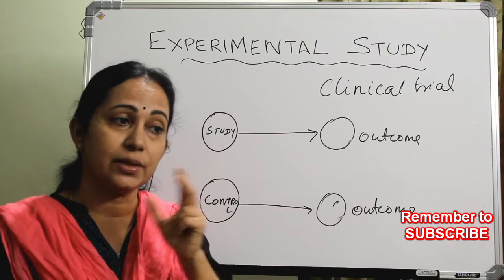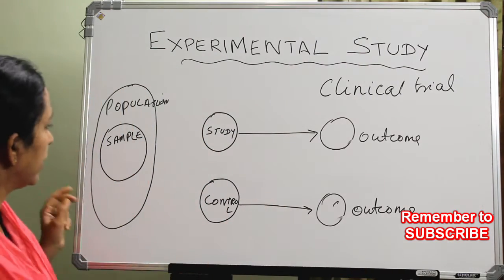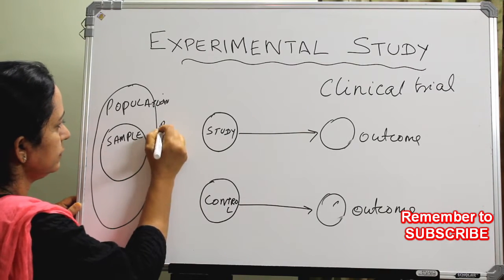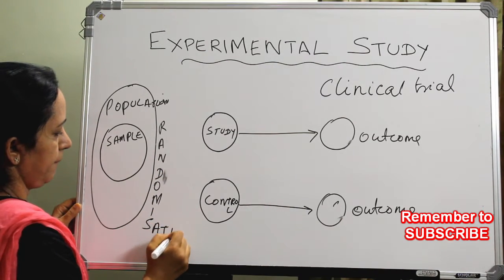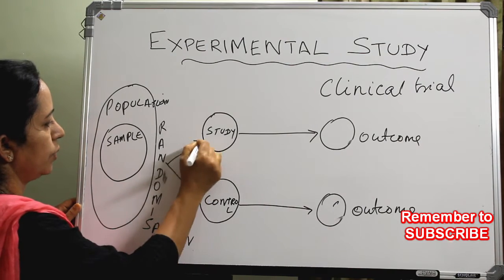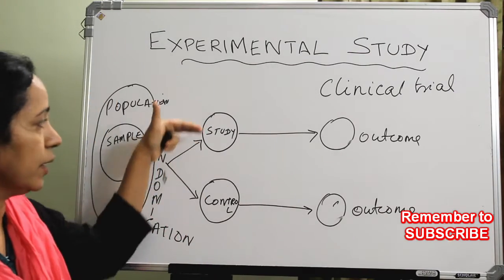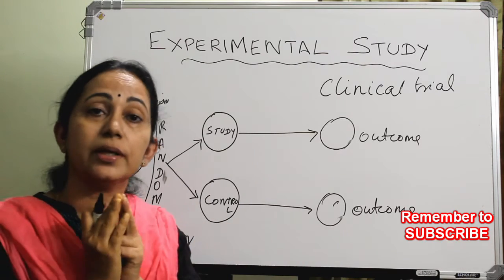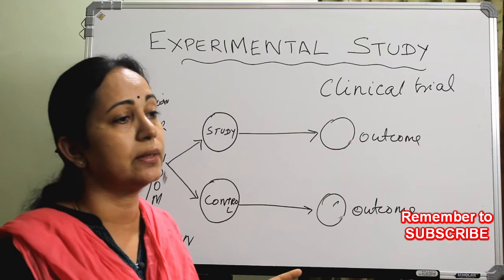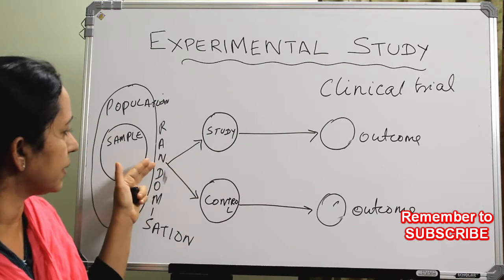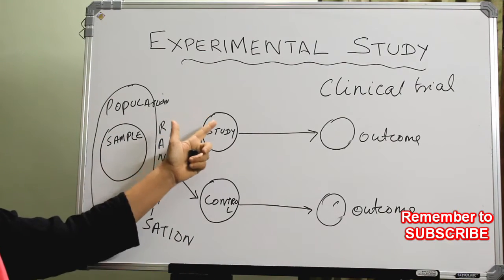The randomized control trial is the better one. In a non-randomized trial, there is a chance of bias in deciding who goes into the study and control groups. By randomization, each sample has an equal chance of going either into the study group or into the control group. Randomization can be done by various methods: simple randomization, block randomization, or computerized randomization — by any method ensuring equal chance of allocation.